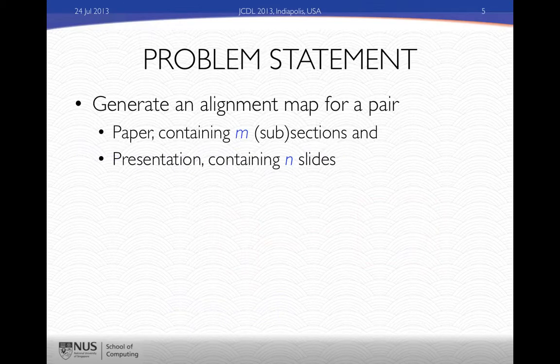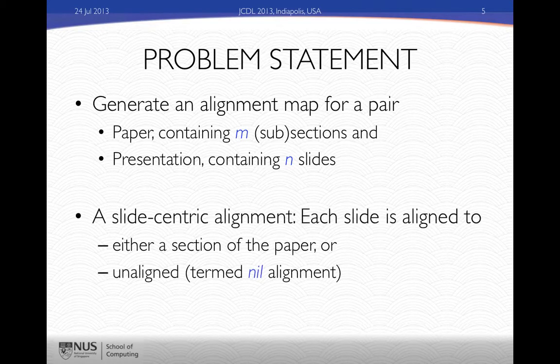The output, where we take a presentation as well as the paper, is some type of alignment map where we describe which slides correspond to which sections of the paper. A paper we can visualize as containing m subsections, and a presentation as containing n slides. This is a slide-centric alignment that we're trying to generate, so it's not symmetric. Each slide is aligned to one of two things: either a section of a paper, or it should not be aligned at all — termed nil alignment.